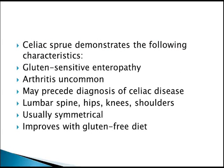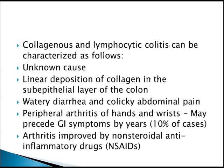Celiac sprue can also present with enteropathic arthropathy — a gluten-sensitive arthropathy. Arthritis is uncommon but may precede the diagnosis of celiac disease. It affects the lumbar spine, hips, knees, and shoulders, and is usually symmetrical. It improves with a gluten-free diet. If the clinical history includes gluten-free diet plus joint pains, think enteropathic arthropathy.